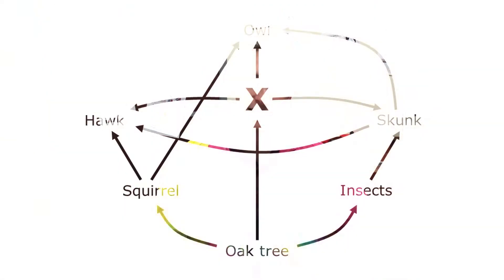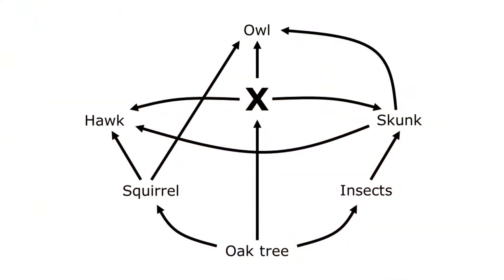Food webs show how energy is transferred through an ecosystem. Here I have an example of a food web, but you can see that I've replaced one of the organisms with an X. So here's your question: what type of organism should replace the X in this food web?